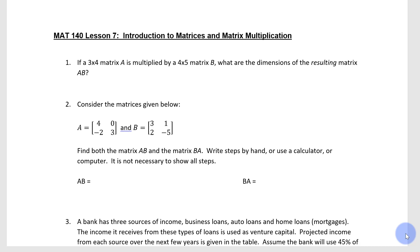This is the MAT140 lesson number 7, Introduction to Matrices and Matrix Multiplication. The first example says: if a 3 by 4 matrix A is multiplied by a 4 by 5 matrix B, what are the dimensions of the resulting matrix AB?